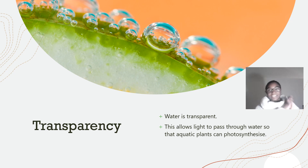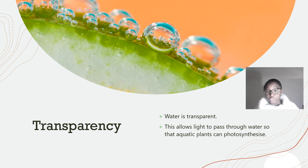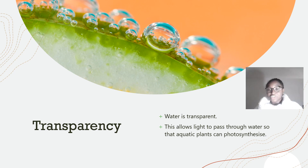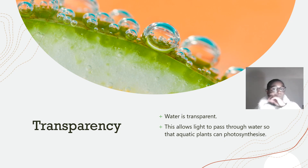Transparency is an extra property, and examiners can give you marks for this. The fact that water is transparent means that light can pass through water so that aquatic plants can photosynthesise. Literally, that's two marks right there — just talk about transparency.